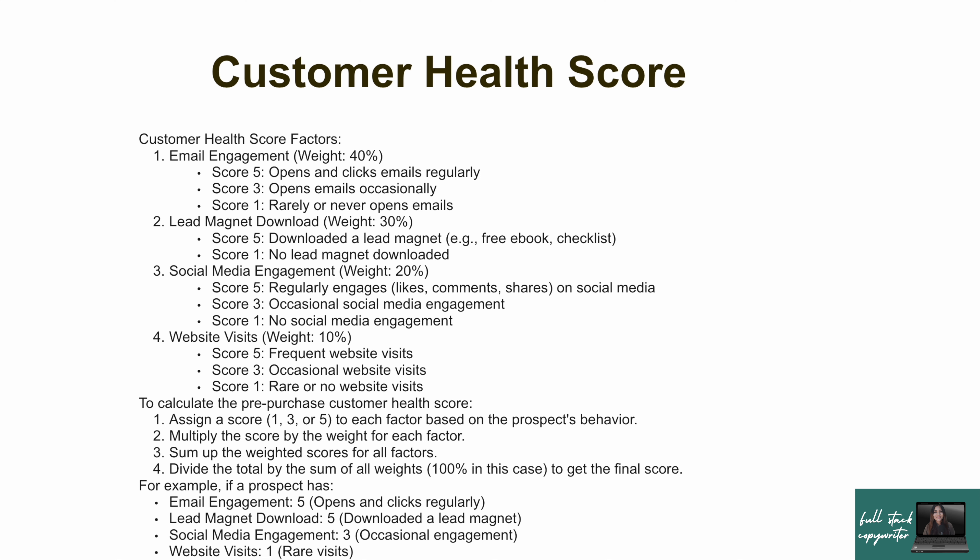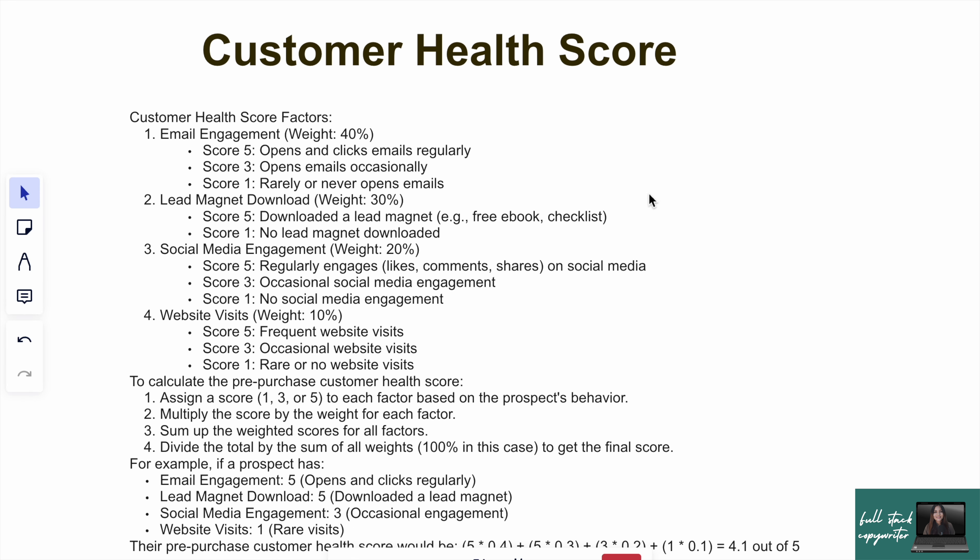Let me give you my personal example for my course business. I calculate health scores for leads who are interested in my service or course but haven't purchased yet — they're still in the funnel. My key metrics are: email engagement (40% weight), lead magnet downloads (30%), social media engagement (20%), and website visits (10%). For email: if someone opened and clicked, they get 5 points; occasionally opened, 3 points; rarely or never opened, 1 point.